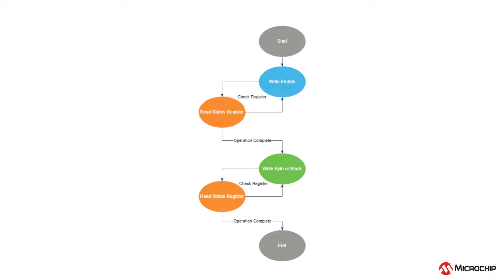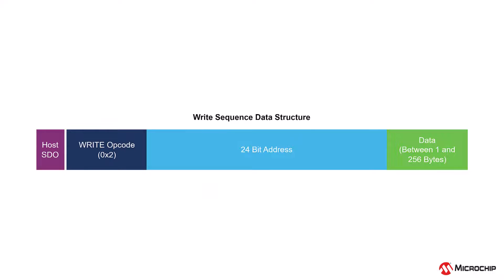After receiving confirmation from the status register of a complete write enable, or completion of a timer, the write may be initiated. The data structure is formatted as such: an 8-bit opcode is followed by a 24-bit address, then finally the data being written. This can either be a single byte or a block of data up to the size of a full page at 256 bytes.